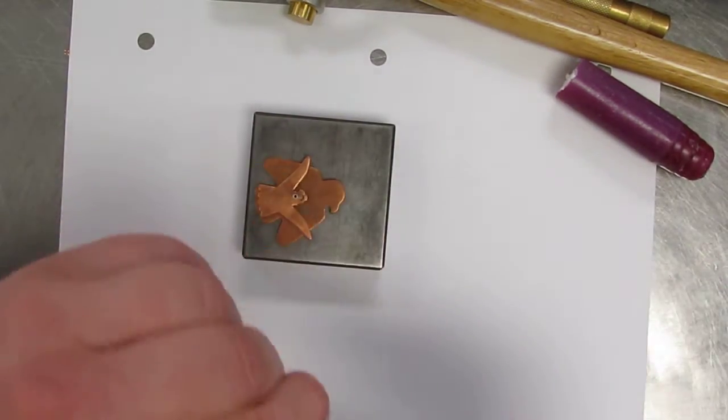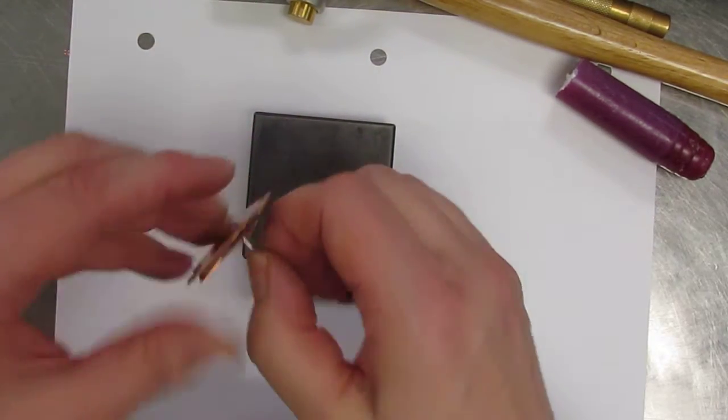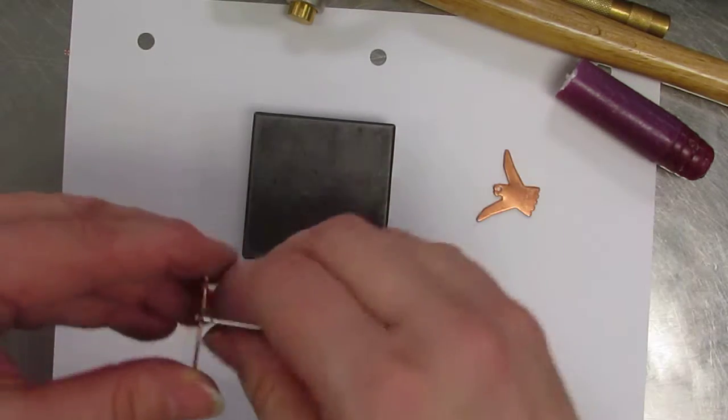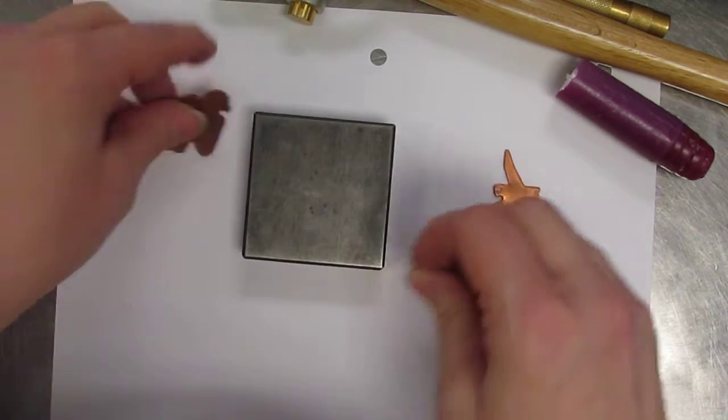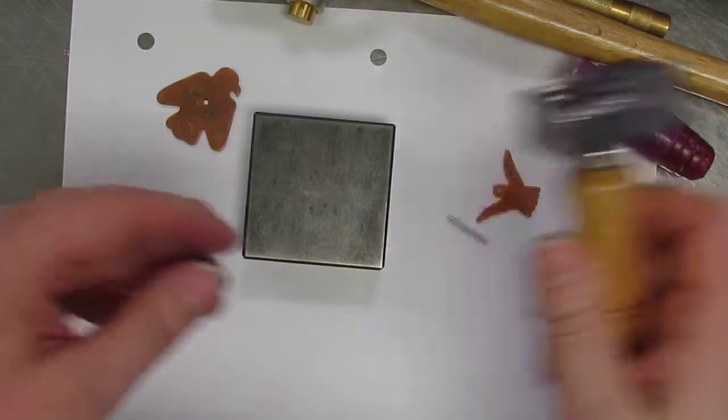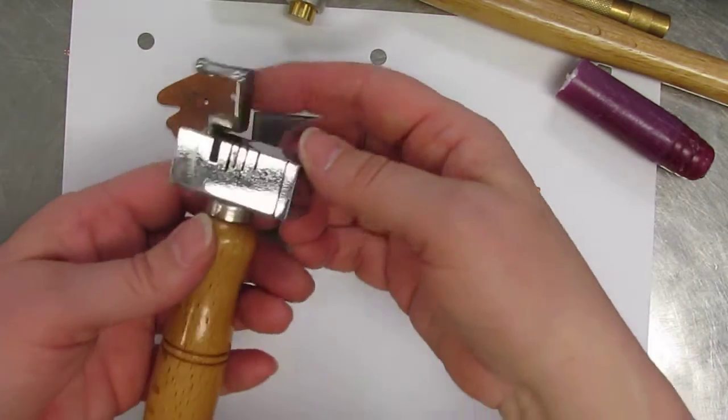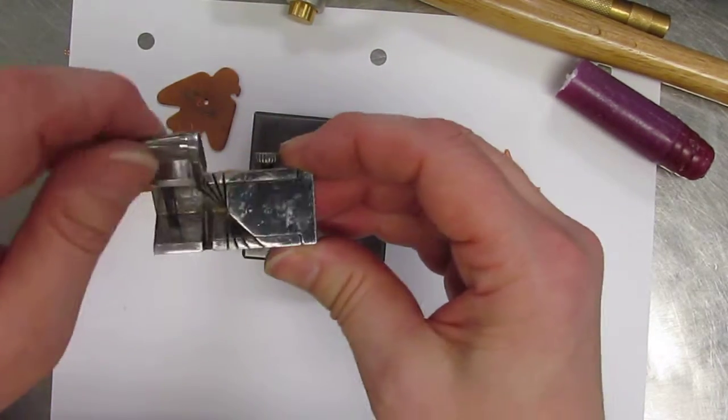Now if I try and use a pair of wire cutters on that, that's going to just squish my tubing. So since it's hollow, I need a different tool. And that tool is this tube cutter.